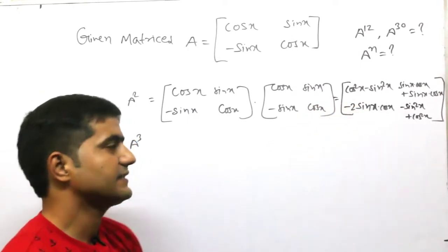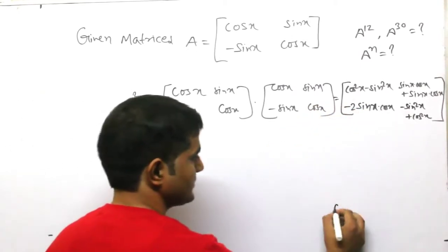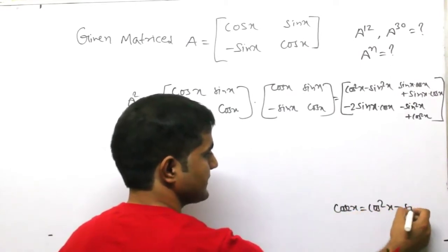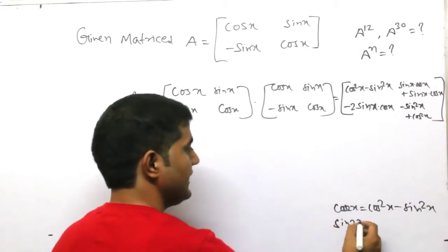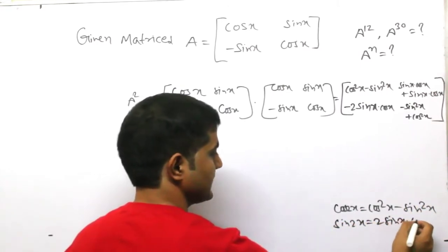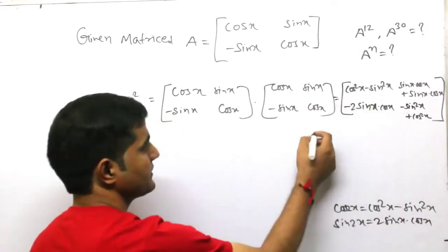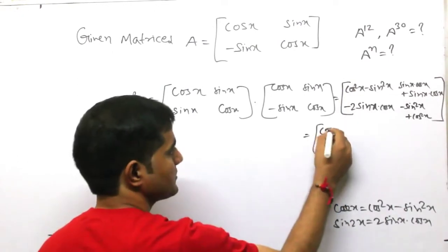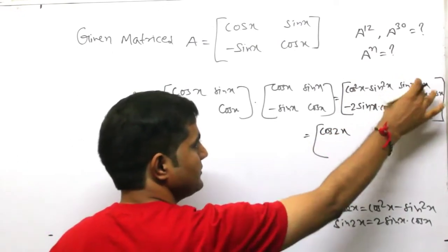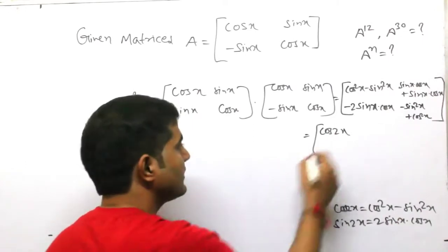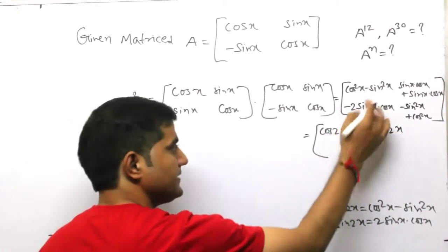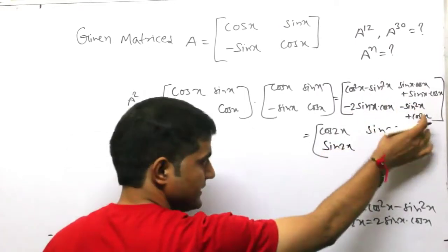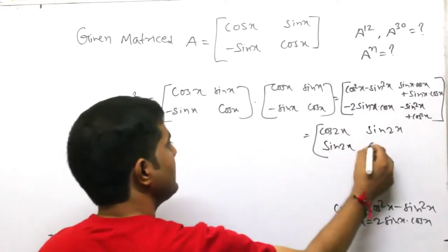You will remember some trigonometric formulas. Cos square x minus sin square x equals cos 2x. You will know that cos 2x equals cos²x minus sin²x. And sin 2x equals 2·sin x·cos x. We use both these formulas to simplify the final result. Cos²x minus sin²x becomes cos 2x. Sin x·cos x plus sin x·cos x, which is 2 sin x cos x, becomes sin 2x. So A square equals [[cos 2x, sin 2x], [-sin 2x, cos 2x]].